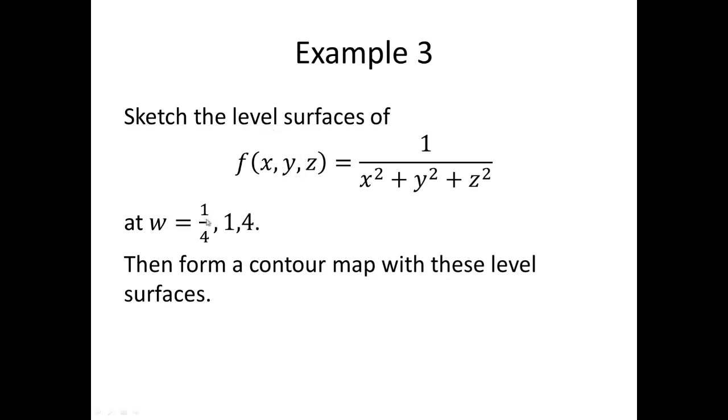Now, take note, if you substitute for instance w equals 1/4, we can move the four to the right side and the denominator x² + y² + z² to the left side via cross multiplication. And so, we'll get a graph of x² + y² + z² equals 4. We'll do the same technique for w equals 1 and w equals 4.